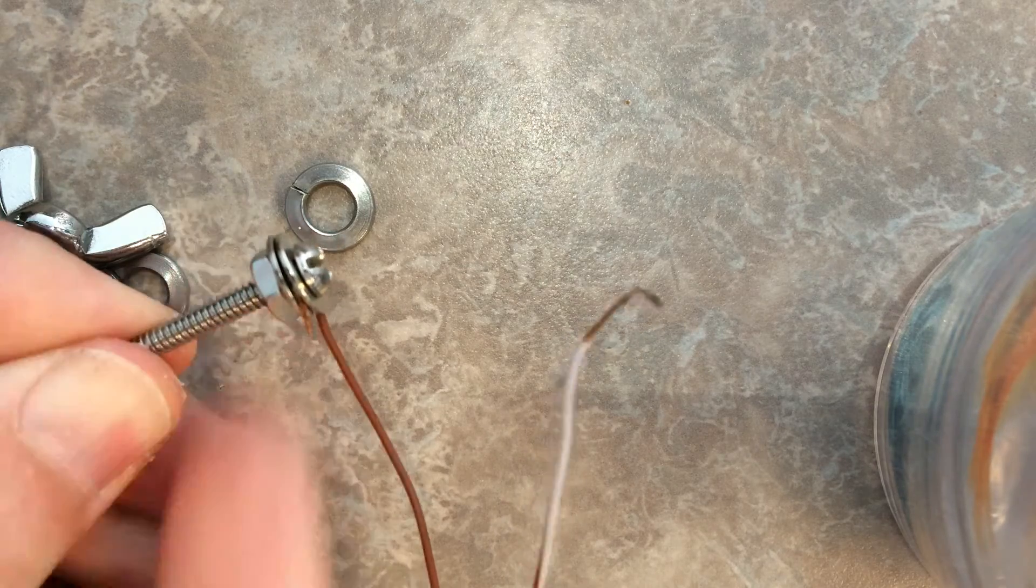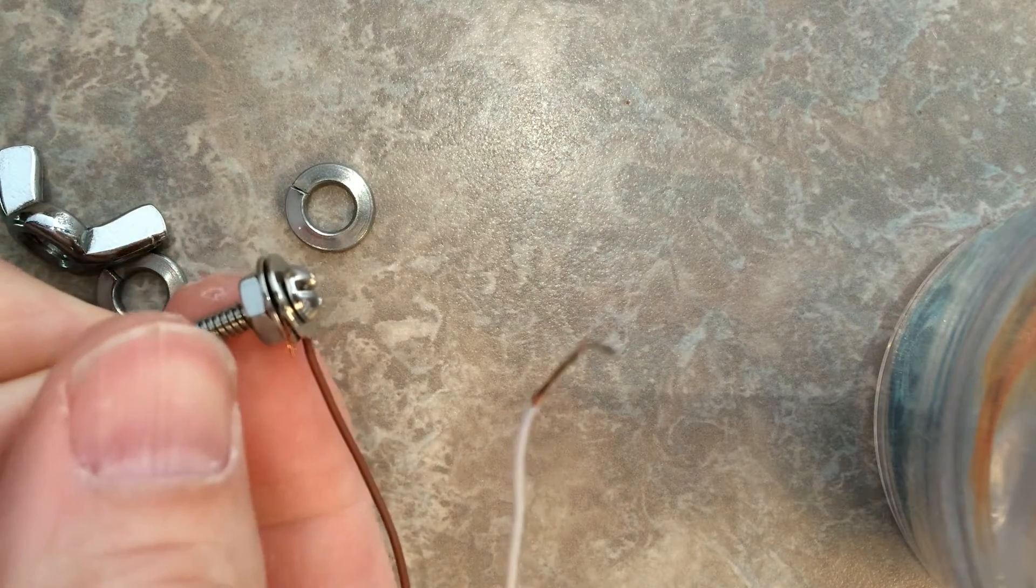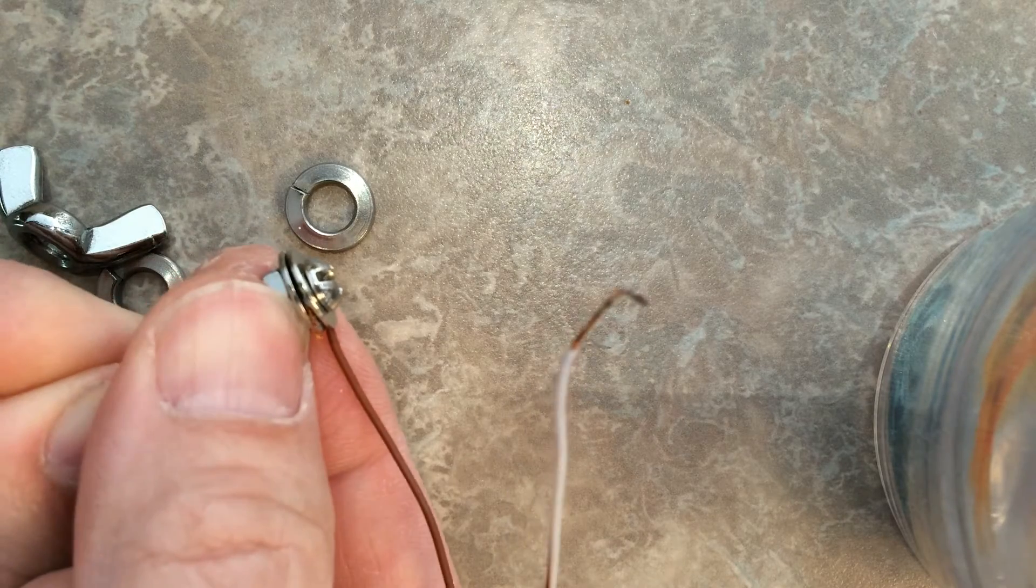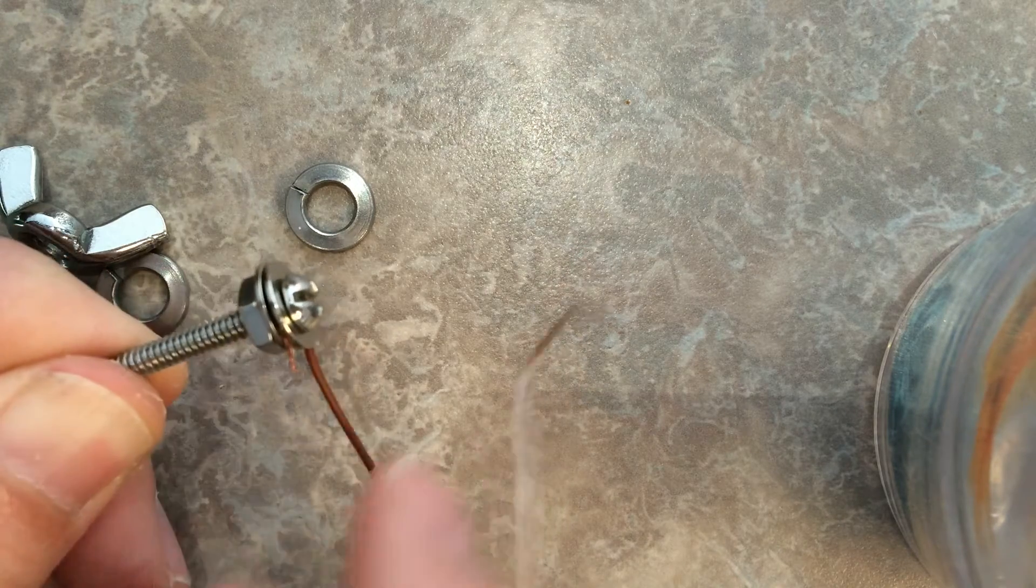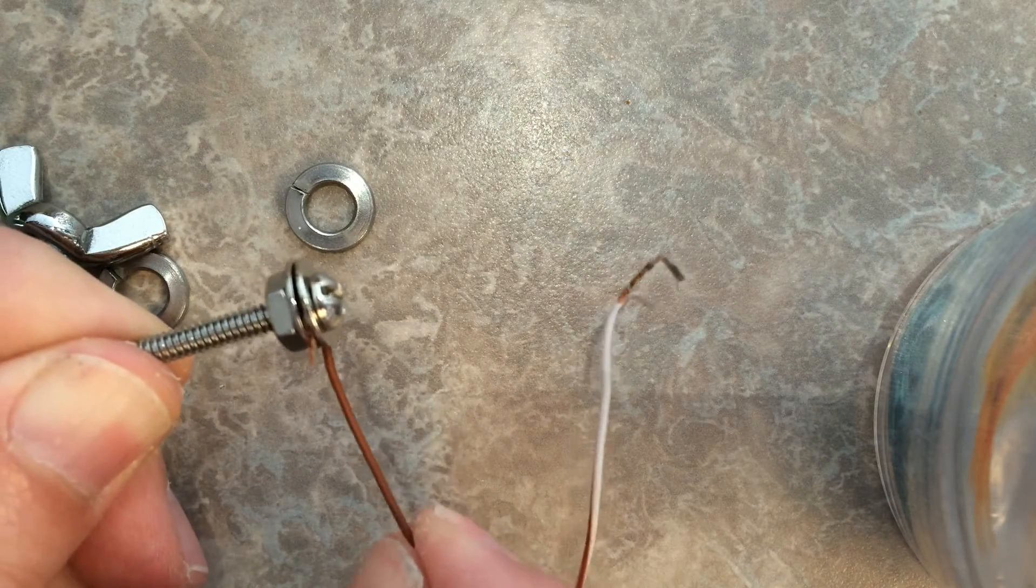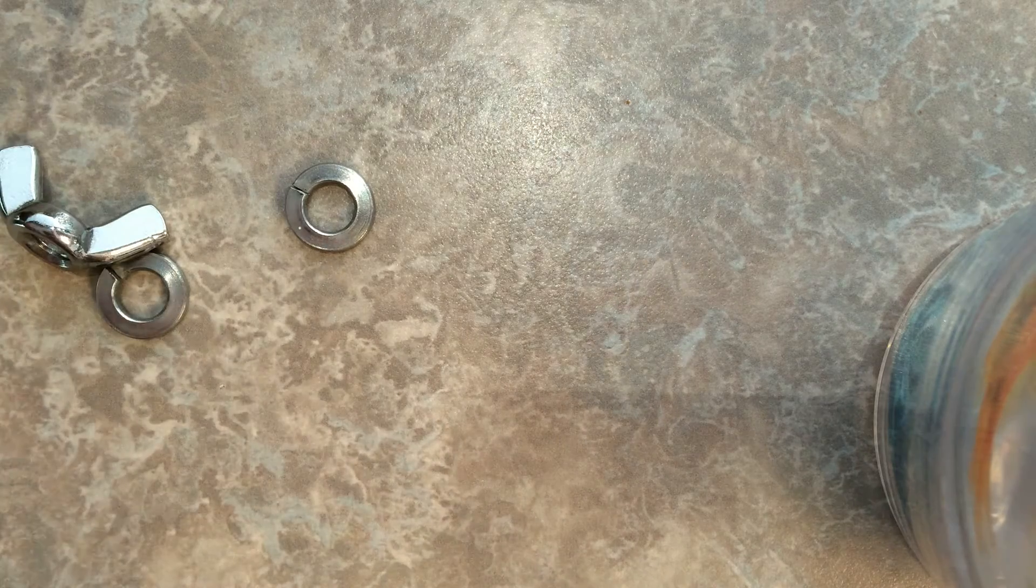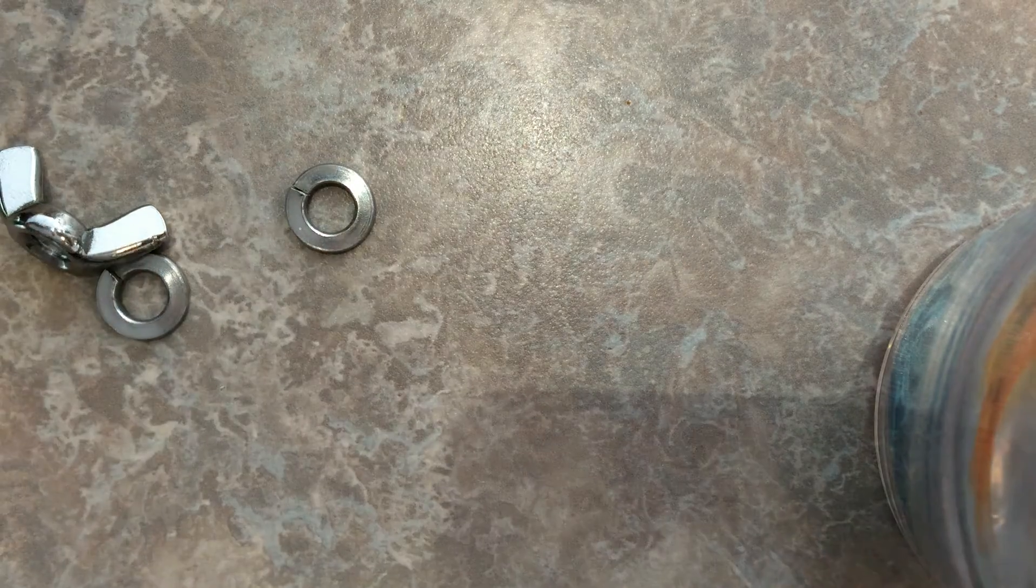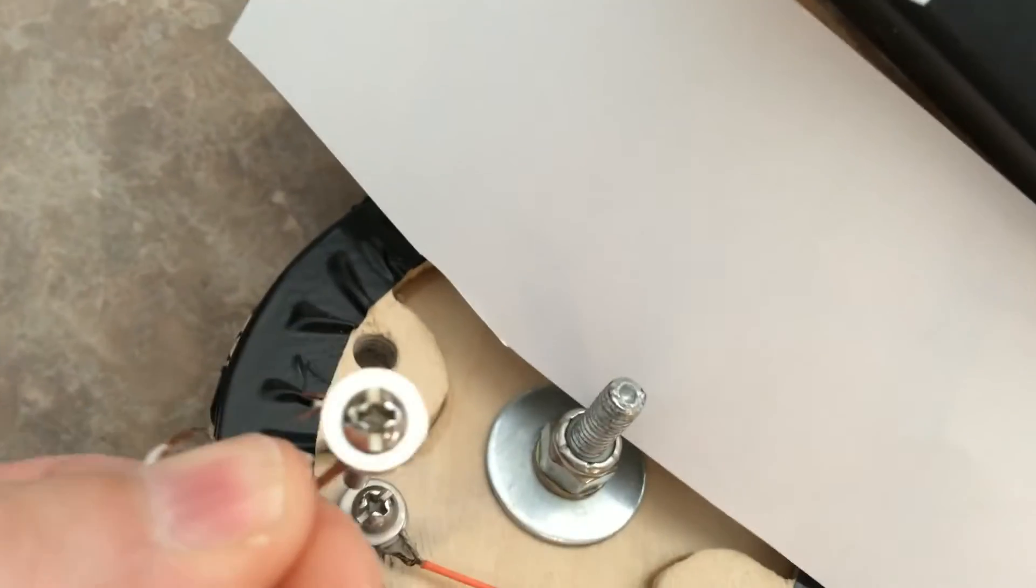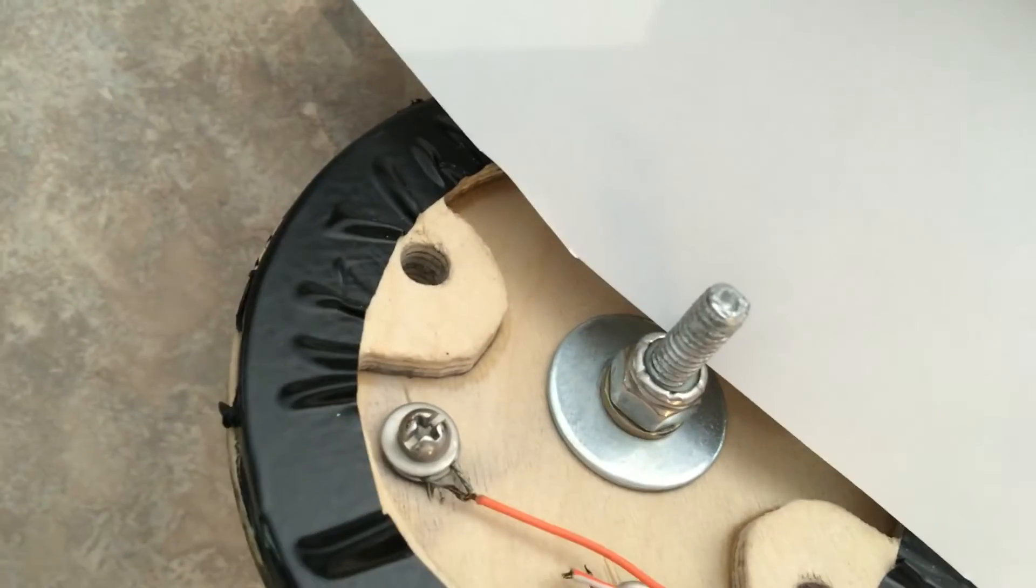Then I tighten the nut. At this point I would use a screwdriver and pliers to tighten that down further, but basically that's to secure that wire. This would go through the actual housing of the eBay and that's how I secured that in.